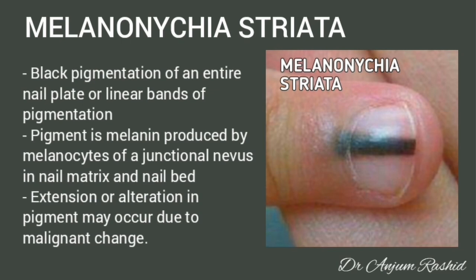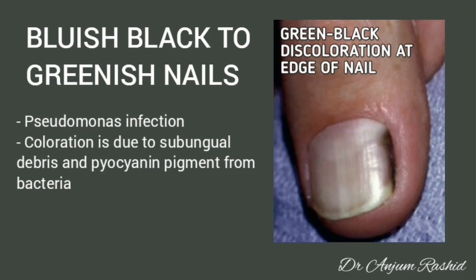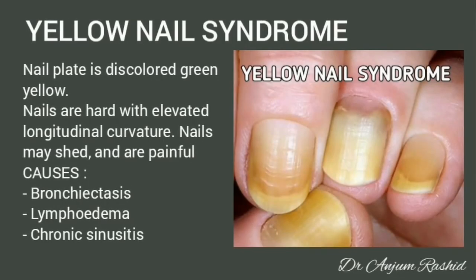Bluish-black to greenish nails: this is due to Pseudomonas infection, and the coloration is due to subungual debris and pyocyanin pigment produced by the bacteria.